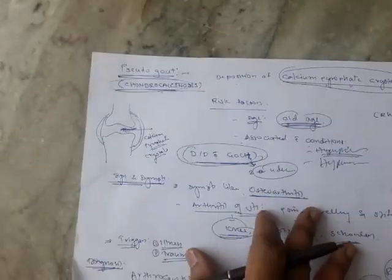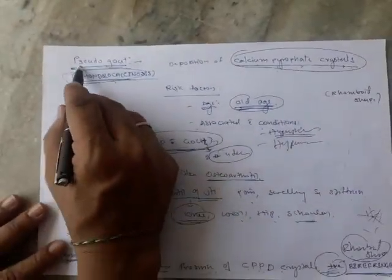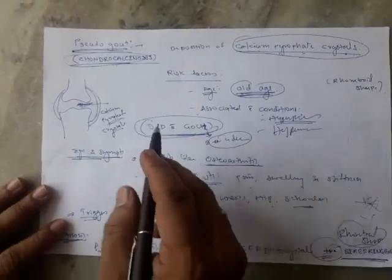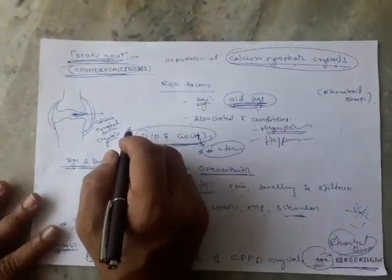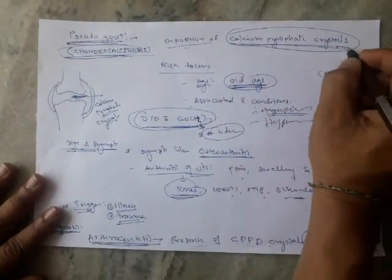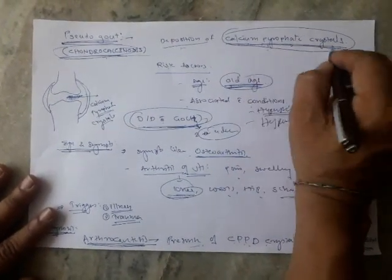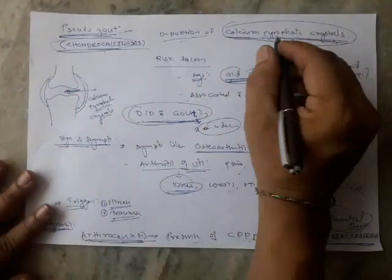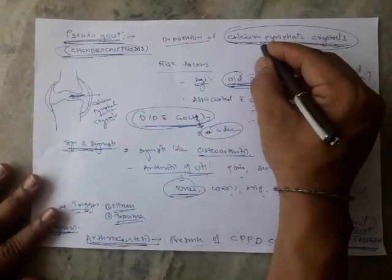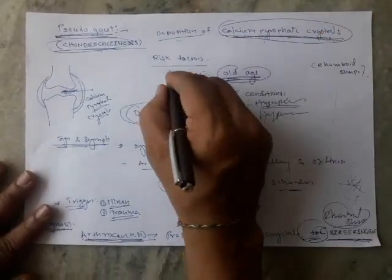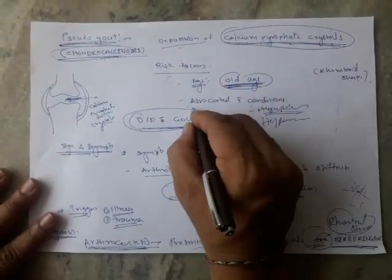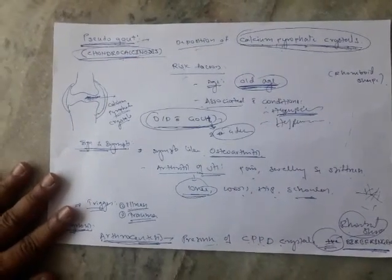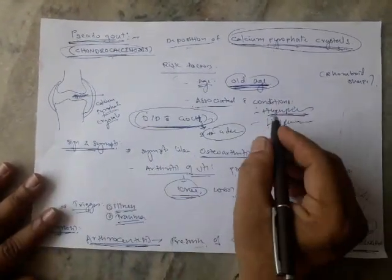Next is pseudogout. In pseudogout, there is a deposition of calcium pyrophosphate crystals, whereas in gout there is monosodium urate crystals. Pseudogout is seen in old age and is associated with conditions like hyperparathyroidism and hypermagnesemia.